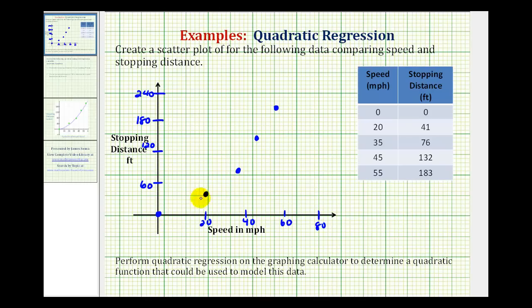So looking at how the data is behaving, this does look like the right side of a parabola that opens up. So what we're going to do now is perform quadratic regression to come up with an equation to model this data. And to do this, we'll be using the TI-84 graphing calculator.